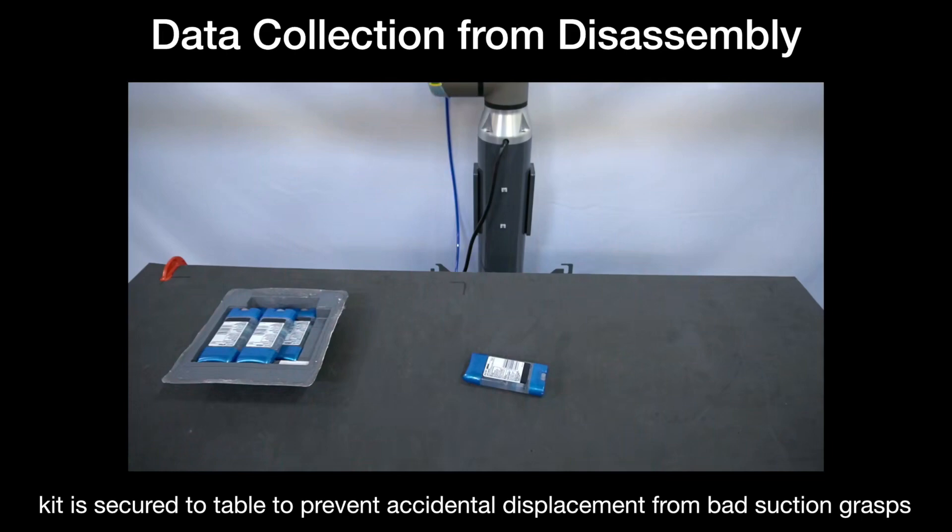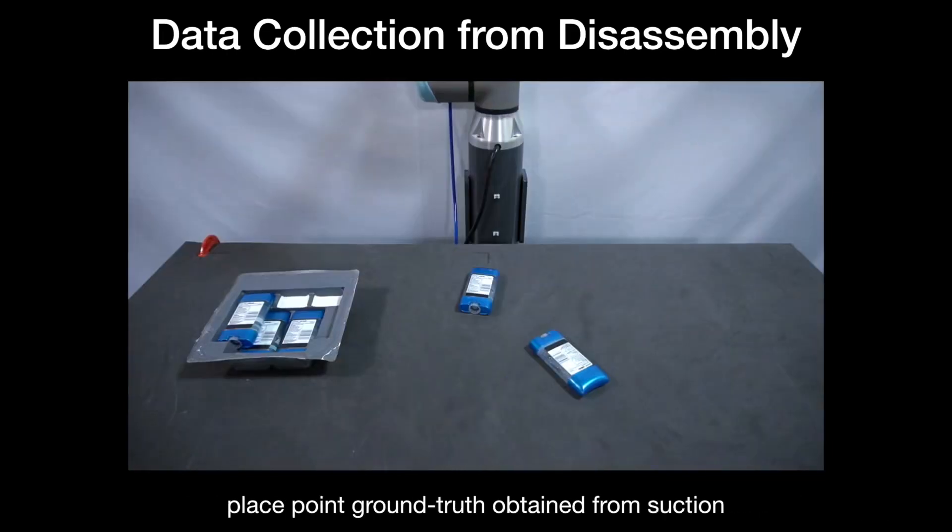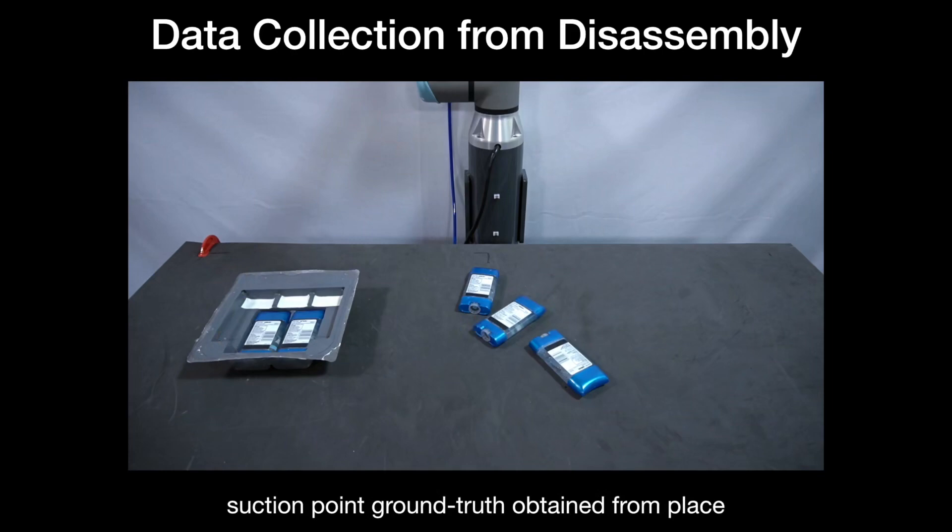By storing all the parameters and images generated during the disassembly process, we can generate the ground truth labels for every module. For the placing network, we use the suction location P and the height map taken after the suction action as a training pair. The training data for the suction network consists of two sets of input-label pairs: the kit height map and the suction position P, and the object height map and the place position Q.